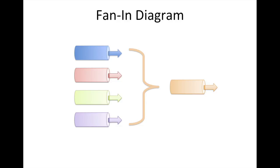In diagram form it might look like this: you might have several channels — doesn't have to be four, could be a hundred — and you want to reduce the number of channels to less. So you're multiplexing those four channels on the left into a smaller number of channels. In this example I'm showing you one, so we're going to Fan-In to one.